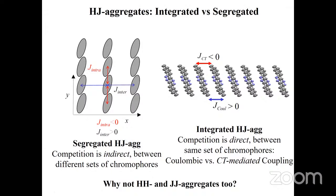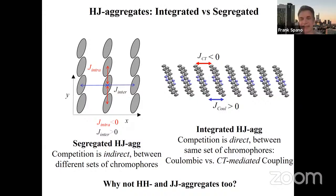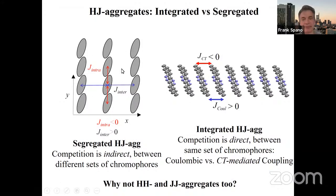Jayashree raises her hand with a question: do these two categories preclude each other? Presumably you can have JCT along with the other J interaction. Yes, absolutely. You can easily introduce CT-mediated couplings in a two-dimensional aggregate and get lots of different varieties — it's very rich. In fact, one of the main applications is a hybrid: if this were a polymer, these chromophores would be repeat units, with mainly CT-mediated coupling along the chain and mainly through-space Coulombic coupling side-by-side — that's also what we call an HJ aggregate. There is so much opportunity for modification, design, and engineering.